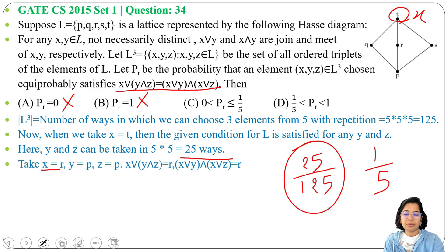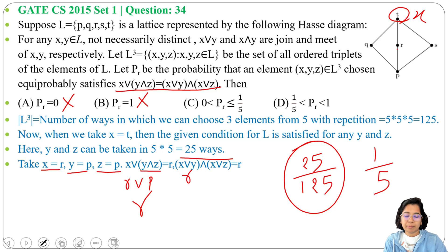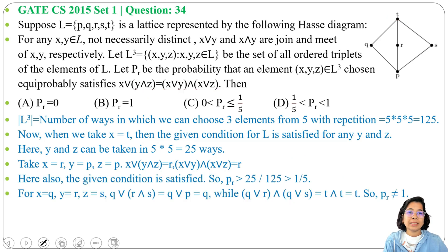Take another example: suppose x = r, y = p, z = p. Then y ∧ z = p ∧ p = p, and x ∨ (y ∧ z) = r ∨ p = r. On the other side, (x ∨ y) ∧ (x ∨ z) = (r ∨ p) ∧ (r ∨ p) = r ∧ r = r. So x = r, y = p, z = p also satisfies the distributive property. This confirms the probability must be greater than 1/5, since additional triplets beyond the x = t cases also satisfy it.